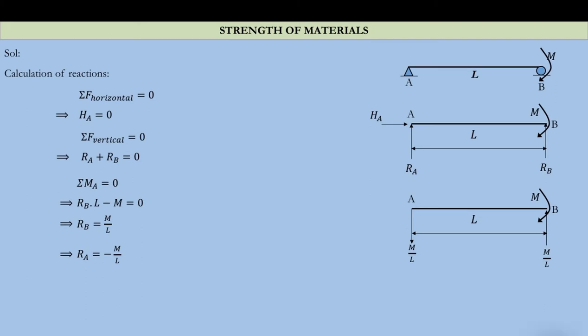The first condition: reaction HA will be zero because there is no external applied horizontal force. Summation of all vertical forces equal to zero gives Ra plus Rb equals zero. To determine Ra and Rb we take moment about A, giving Rb as m/L — the assumed direction of Rb is correct. We then get Ra as minus m/L, so that the summation equals zero.